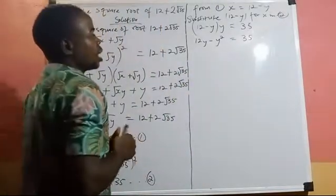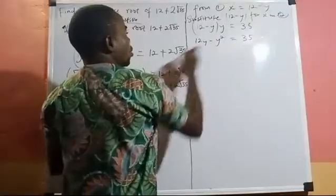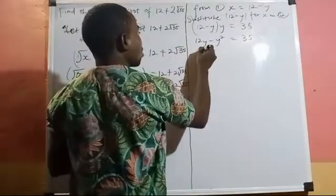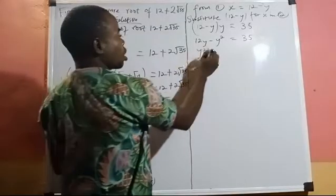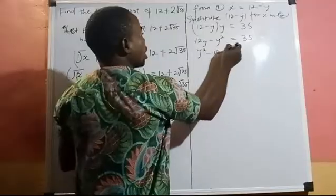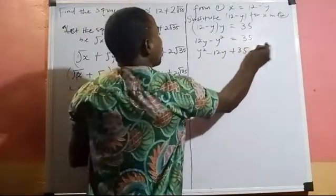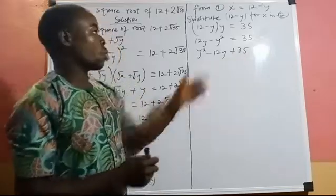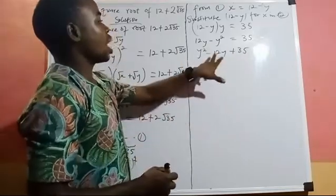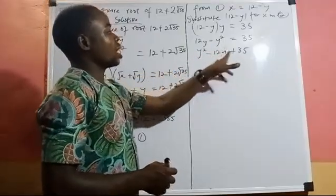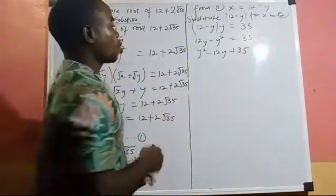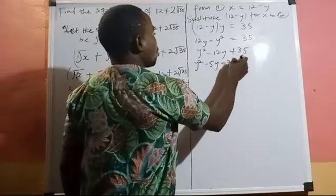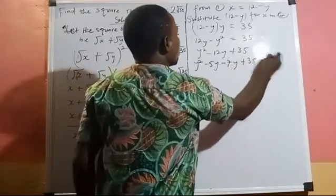Rearranging, we take all terms to one side and equate to zero: y² − 12y + 35 = 0. This is a simple quadratic equation which we can solve by factorization. We need two factors of 35 that add up to 12, which are 7 and 5.